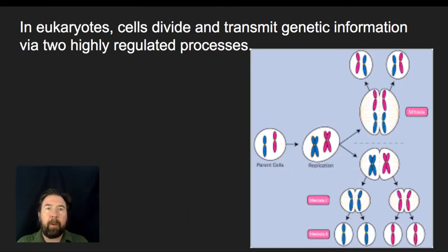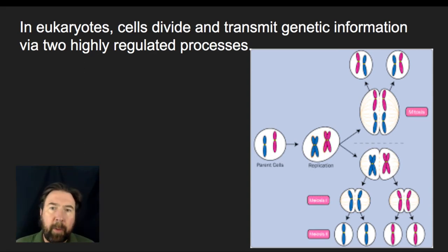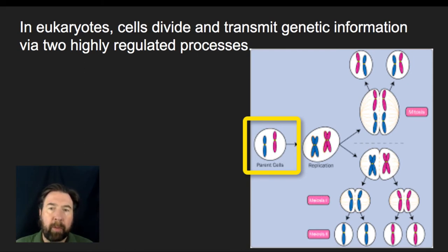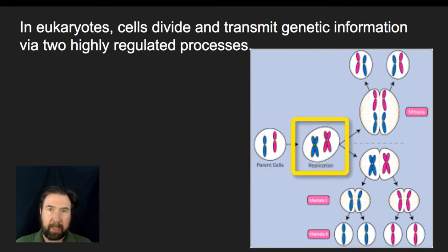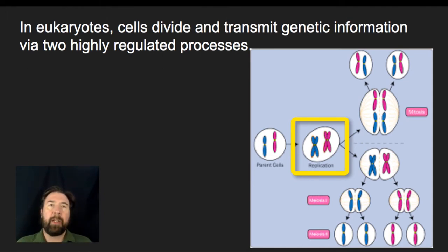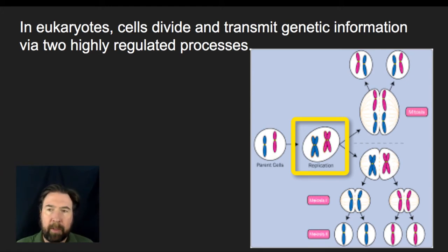Let's talk about the cell division processes that take place in eukaryotes. All parent cells have their set amount of chromosomes — this example has two chromosomes. When that parent cell undergoes DNA replication in S phase of interphase, it doubles the amount of DNA but doesn't actually change the amount of information in the cell. It just goes from one red and one blue chromosome — one that came from each of the parents.